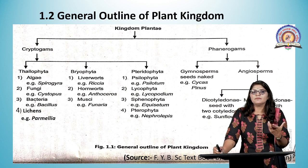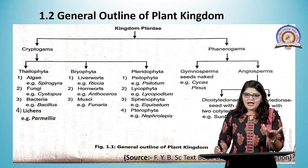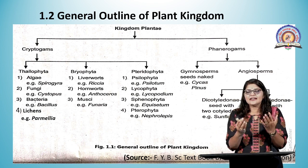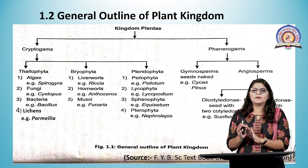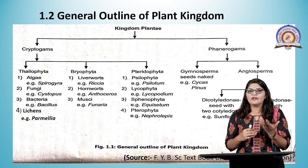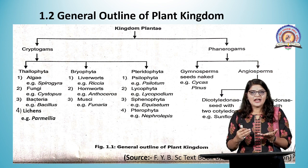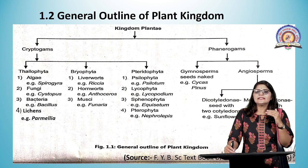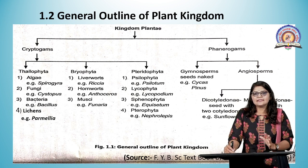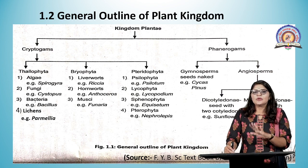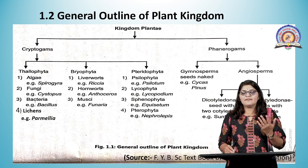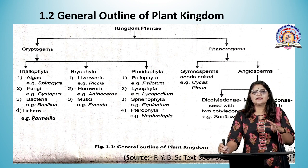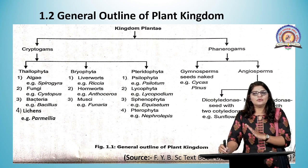Gymnosperms ('gymnos' means naked) bear naked seeds — they do not have a fruit; whatever seeds are present are naked. Examples include Cycas and Pinus. Angiosperms have well-developed flowers, well-developed fruits, and seeds enclosed within the fruit. Angiosperms are further divided into two classes: Dicotyledons (seeds with two cotyledons, example: sunflower) and Monocotyledons (seeds with a single cotyledon, examples: maize, jowar, bajra, sugarcane).